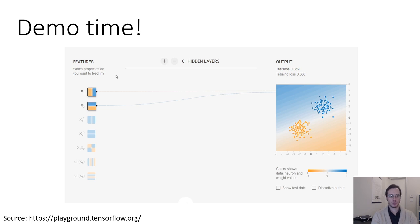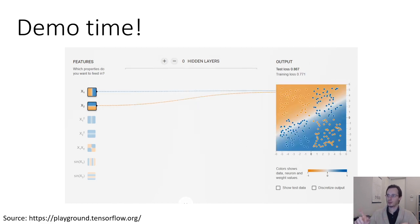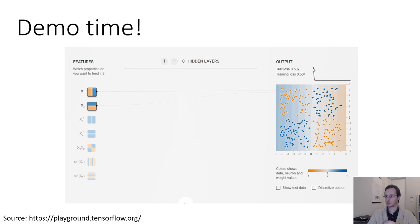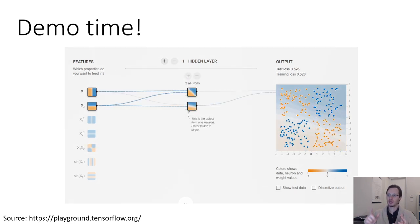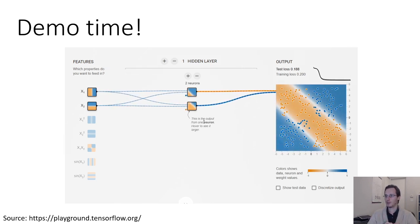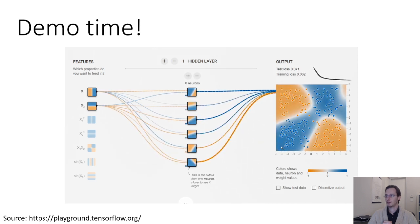Let's see logistic regression and neural networks in action using playground.tensorflow.org. First, logistic regression on a linearly separable example — it works perfectly. On a non-linearly-separable example, logistic regression gets about 50% error. Adding the x1 times x2 feature makes logistic regression nail it, but you have to know which feature to pick. To avoid manual feature design, add a hidden layer: a linear layer followed by sigmoid. With more neurons, the model finds an even more interesting decision boundary and eventually figures out the right classifier.